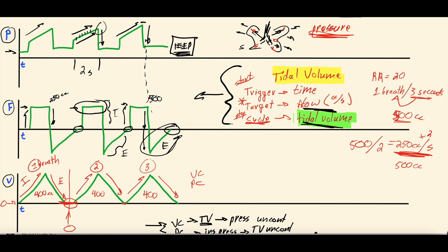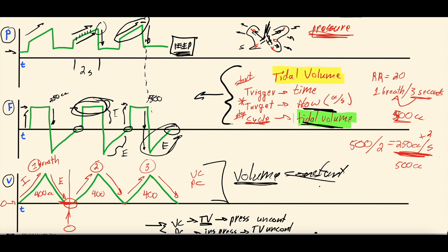So this is very characteristic of volume control: a flat-top flow scalar, a ramped-up pressure scalar, and a volume scalar that is pretty consistent between pressure control and volume control. Hopefully that was helpful. We know it's an advanced topic — definitely check out those introductory videos, and we'll have the whole ventilator series linked in this video's description. We appreciate you all. Stay well, keep learning, and we'll see you next time.